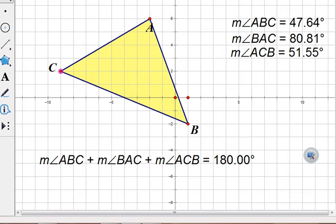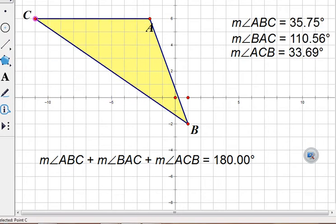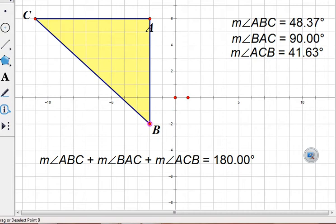Absolutely nothing happens to our angle sum regardless of what else is happening with our angles. It doesn't matter what kind of triangle I have. My three angles will always add up to 180 degrees.